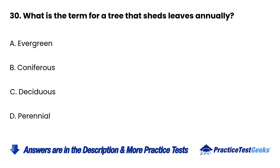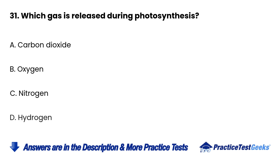Question 31: Which gas is released during photosynthesis? a. Carbon dioxide. b. Oxygen. c. Nitrogen. d. Hydrogen.